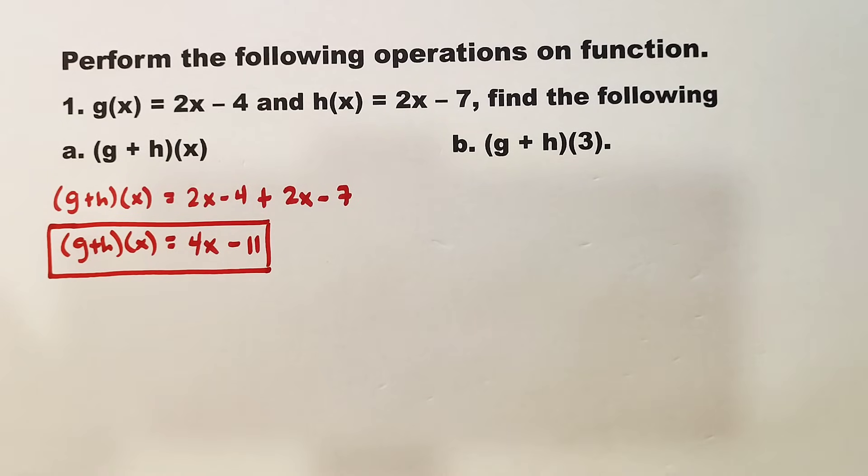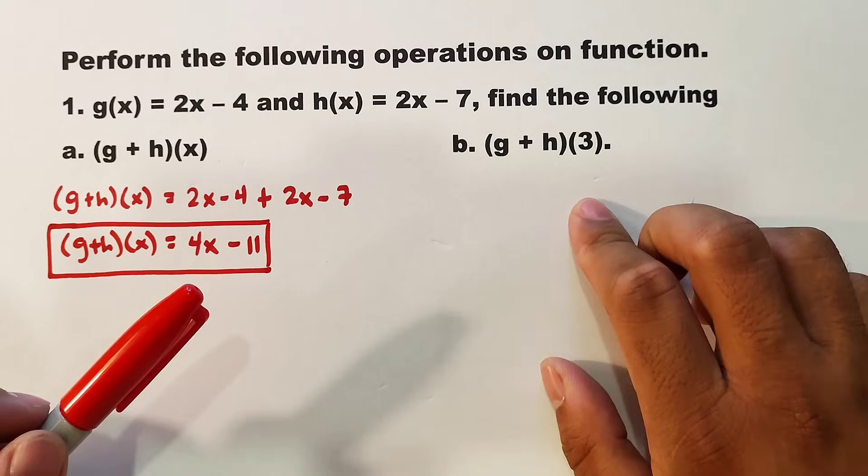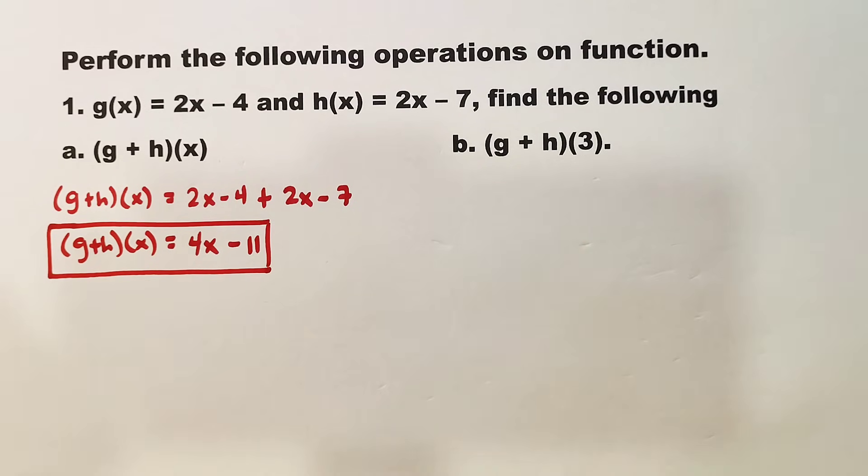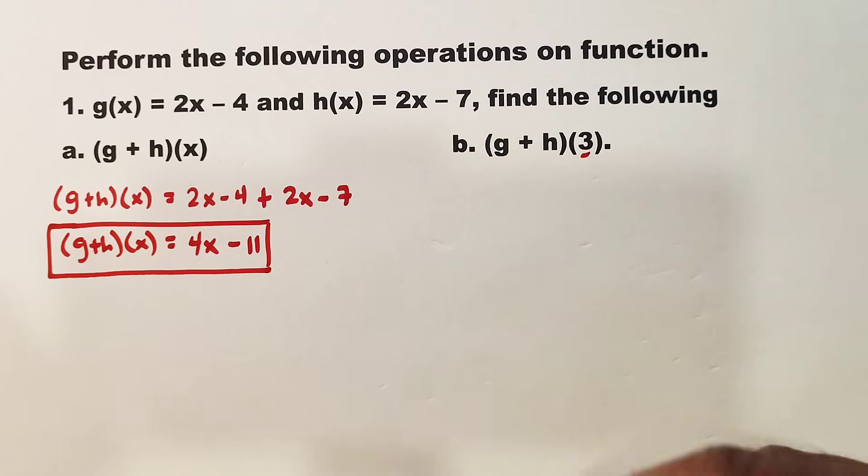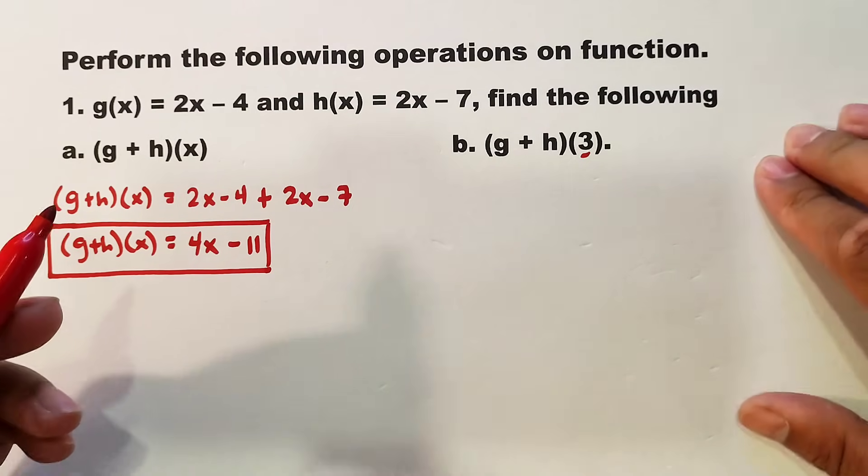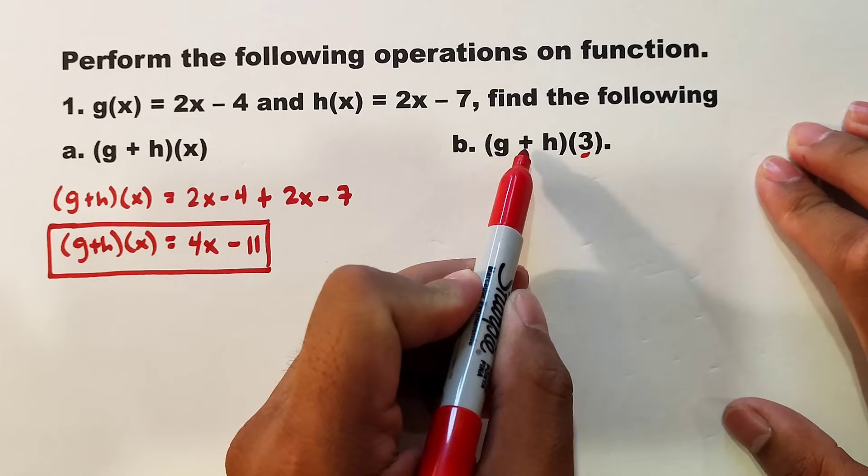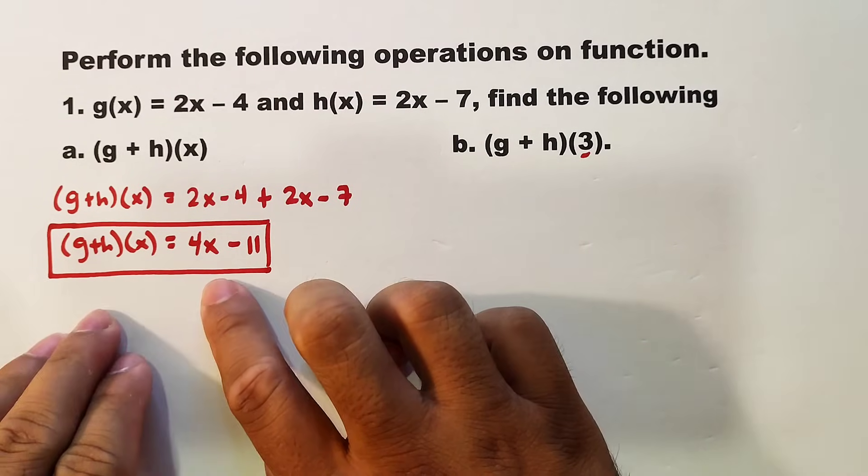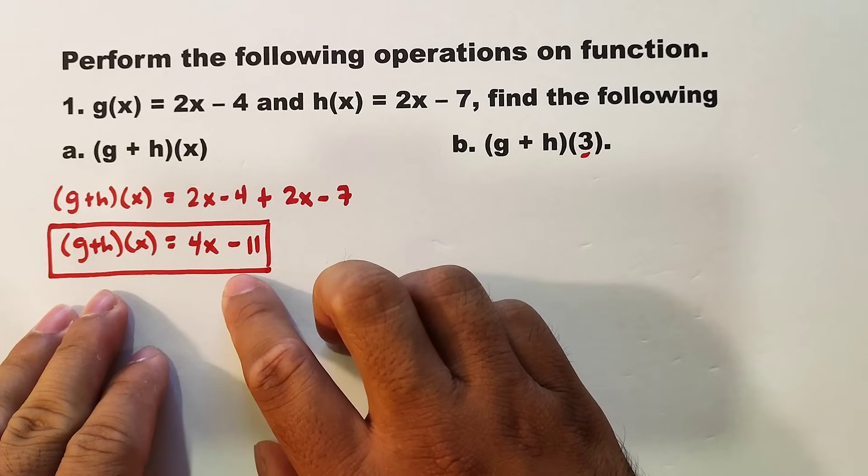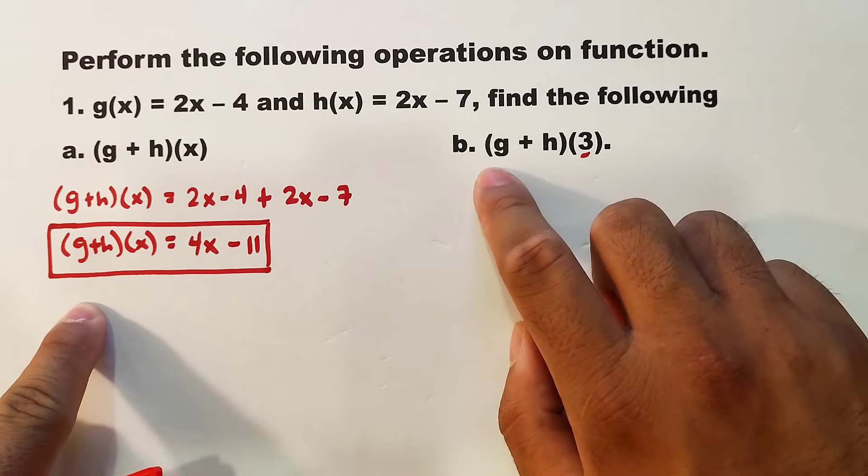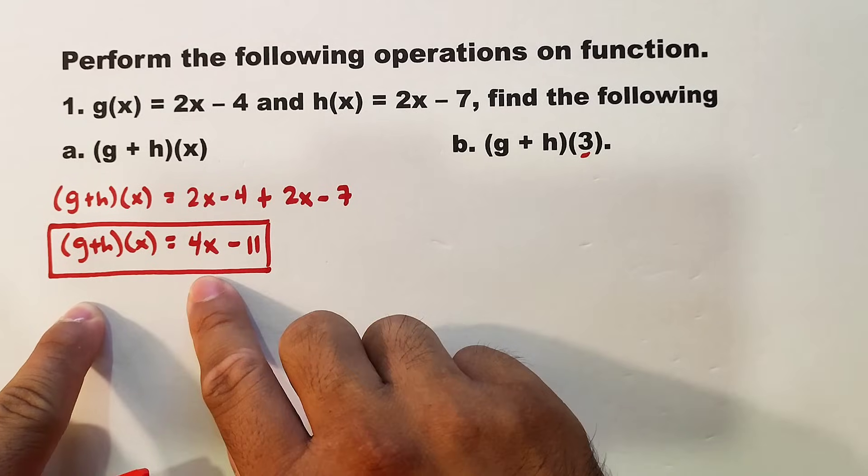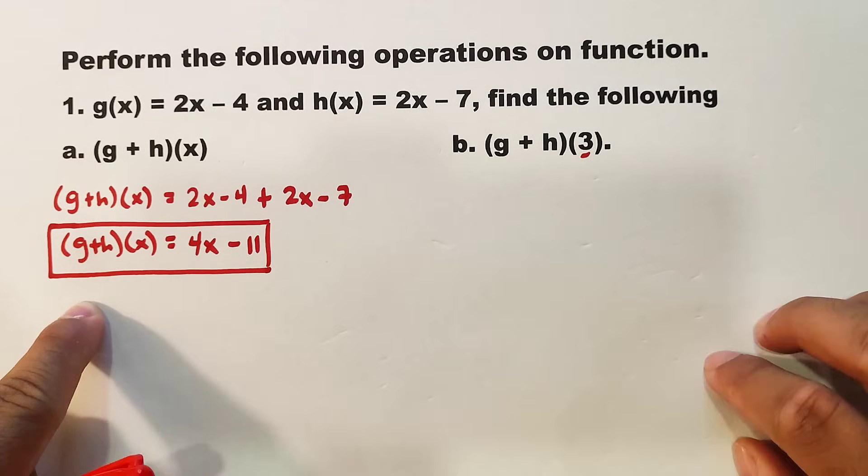What about letter B? For letter B, (g + h)(3), 3 will be our input. There are two possible ways to do this. I'll show you the first method and then the alternative method. For the first method, let's assume we are done adding the two functions and we have 4x - 11.